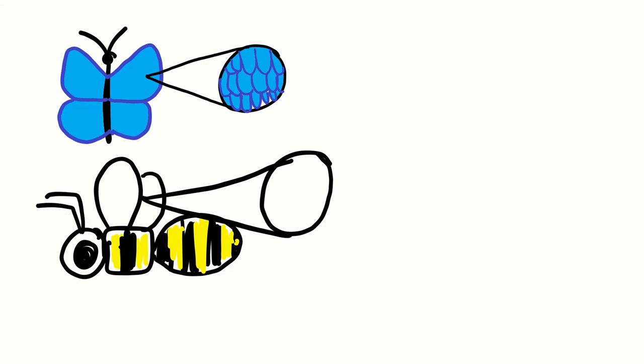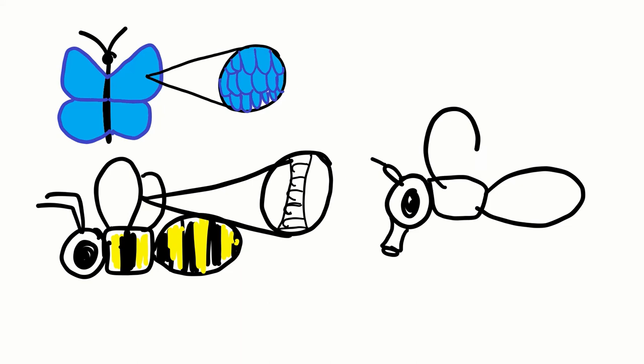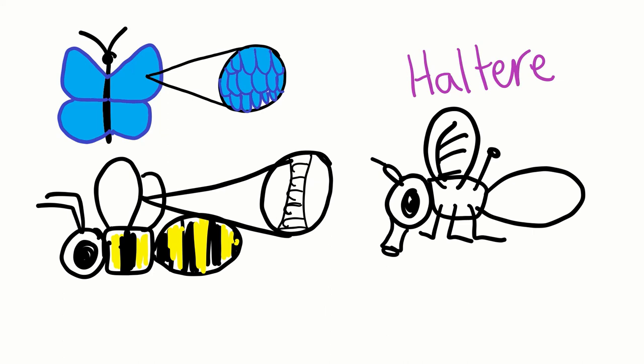Bees have membranous wings, but they also have hamuli, which are little hooks that connect the front wing to the hind wing for stronger flight. Flies, although they only have one pair of wings, get something completely different in the spot of the hind wings — this is what is called a haltere. It is a flight stabilization organ that gives the fly the ability to zip and zoom around the room. All of these are examples of insect wings with a modification to make the wings more suitable for the insect's environment.